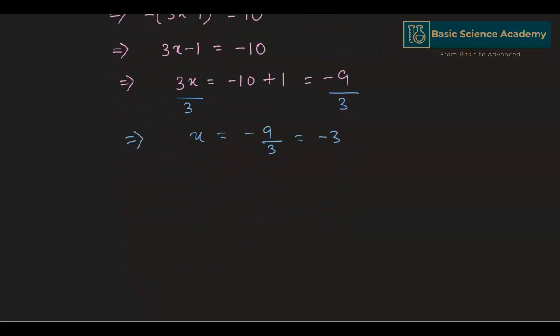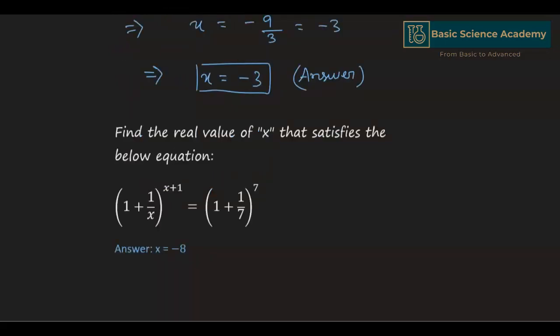So x equals minus 3 — this is our answer. Now we can solve a similar question: find the real value of x that satisfy the equation 1 plus 1 by x to the power of 1 plus x, is equals to 1 plus 1 by 7 to the power of 7. We can solve this question in a similar way and the answer is x equals minus 8.